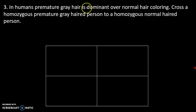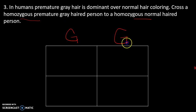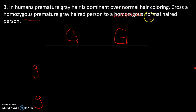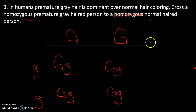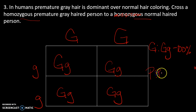Number three: in humans, premature gray hair is dominant over normal hair coloring. Cross a homozygous premature gray to a homozygous normal hair. If gray is dominant, homozygous premature gray — I'll use the letter G — is GG, and homozygous normal is gg. We could argue they didn't need to say homozygous because that's the only way it could be true. When we do the cross, the genotypic ratio is 100% heterozygous, which means phenotypically we see premature gray 100% of the time.